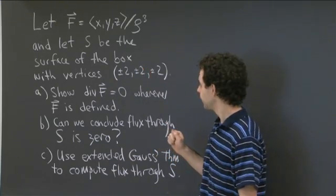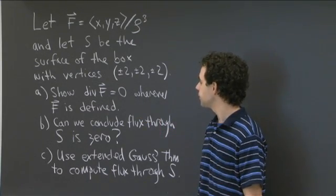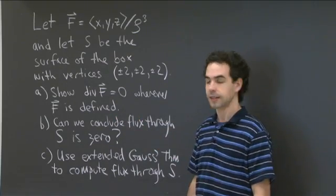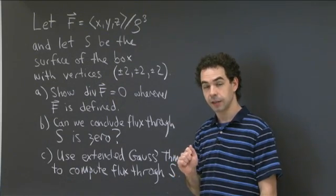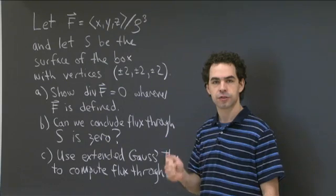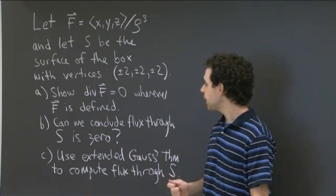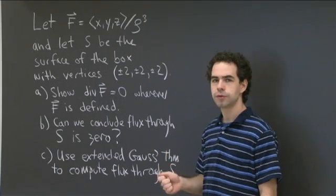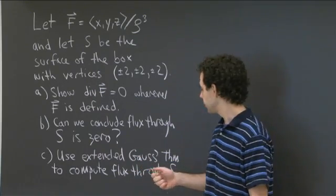So it's a cubical box. What I'd like you to do is first, in part a, show that the divergence of F is 0 wherever the field F is defined. In part b, think about whether we can conclude from that that the flux through the surface S is equal to 0. And in part c, use the extended version of Gauss's theorem, or the extended divergence theorem, to actually compute the flux through S by computing an integral.